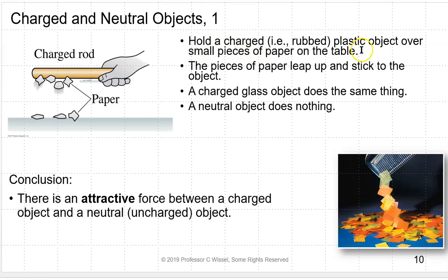If you hold a charged rubbed plastic object over small pieces of paper on the table, the pieces of paper will leap up and stick to the object. A charged glass object does the same thing. A neutral object does nothing. You probably have noticed this in the wintertime when you comb your hair and little pieces of fuzz and lint stick to the comb. This is what was going on.